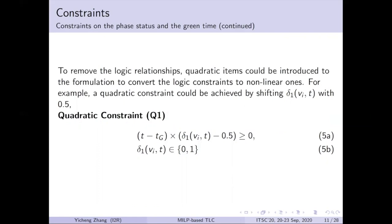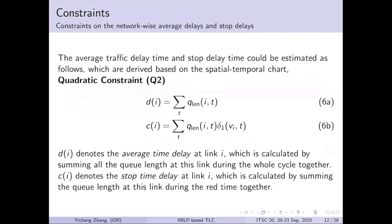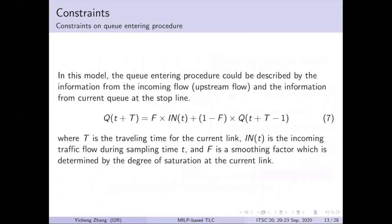In a later stage, we try to convert this quadratic constraint into mixed integer linear constraints. Then the constraint on the network-wise average delay and stop delays are introduced. The average traffic delay and the stop delay time could be estimated based on the spatial-temporal chart, with equations shown in 6a and 6b. For the queuing process, we introduce the queue entering, queue exiting, and queue length dynamics. To introduce the queue entering process, we take the platoon dispersion model proposed by Robertson into consideration.